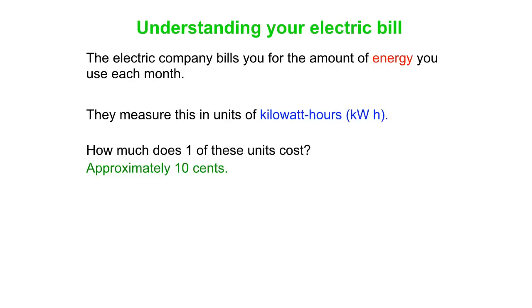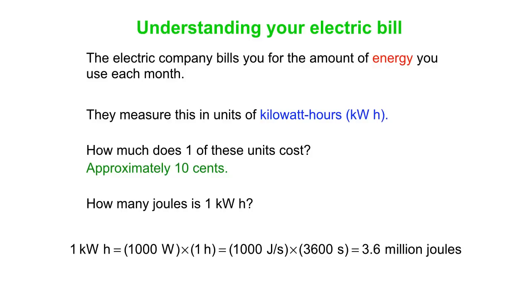So how many joules is in one kilowatt hour? Feel free to pause at this point and calculate that yourself. And here's the answer: a kilowatt hour is 1,000 watts times an hour, but an hour is 3,600 seconds. And so you end up with 3.6 million joules for which they charge you 10 to 20 cents. That is crazy that you get 3.6 million joules for that little amount of money.